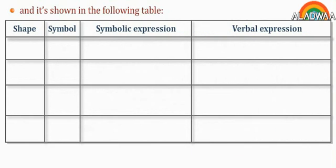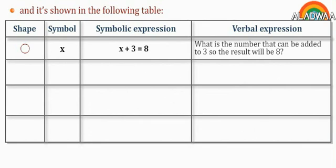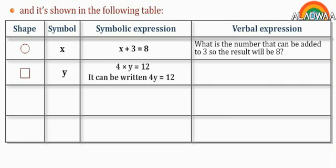This is shown in the following table. The shape circle is equivalent to the symbol x; the symbolic expression is x plus 3 equals 8. The shape square is equivalent to the symbol y; the symbolic expression is 4 times y equals 12, which can also be written as 4y equals 12.